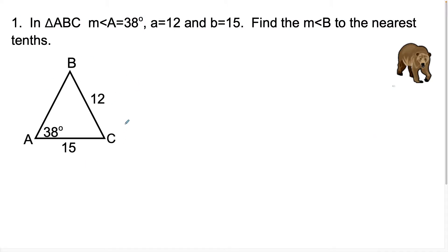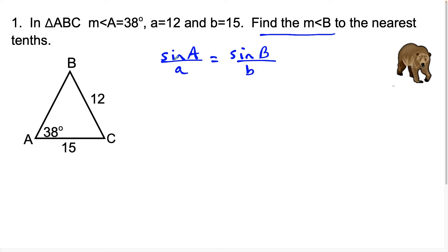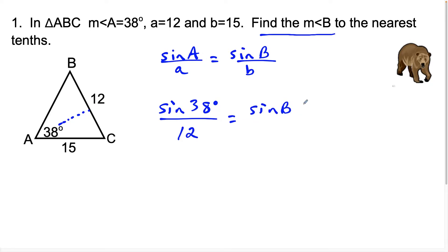In question one we have triangle ABC and we're going to find the measure of angle B to the nearest tenths place. Setting up the formula, we have sine of angle A over side A equals sine of angle B over side B. Plugging in, the measure of angle A is 38 degrees and side A is 12 units — side A is opposite angle A. So we have sine 38 over 12 equals sine of B over side B, which is 15 units across from angle B.